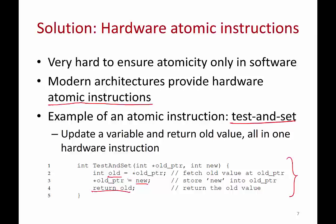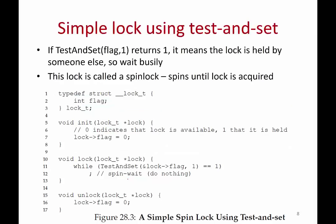What does test-and-set do? It reads the old value, sets it to a new value, and returns the old value — it tests the old value and sets it, all in one swoop. There is no gap; you can never be interrupted between reading the old value and setting the new value. Using this, here is a simple lock: if test-and-set on flag with value 1 returns 1, it means the old value was also 1, so the lock is held by someone else — in that case you simply wait.